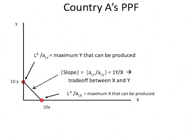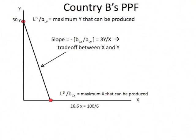Brazil similarly has the ability to produce 50Y with its resources, or 16.6X if it only produces X, with an opportunity cost of 3Y for every X.